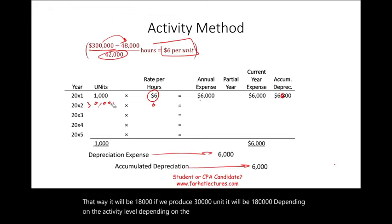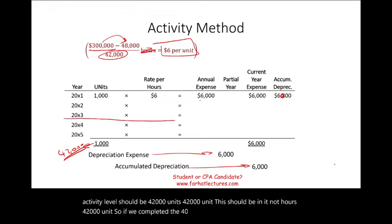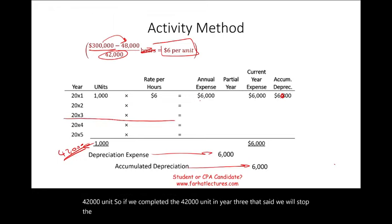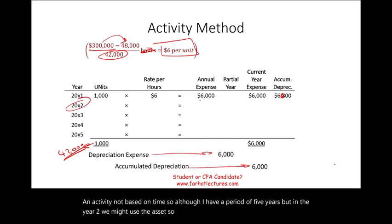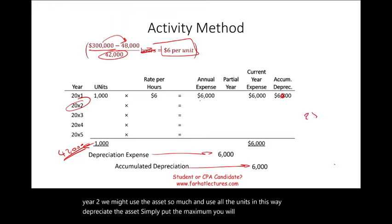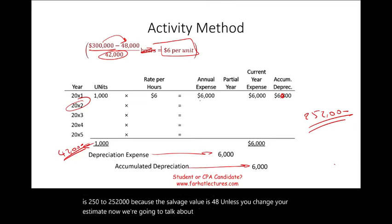The total activity level should be 42,000 units. If we complete the 42,000 units in year three, that's it — we stop depreciating this asset. The activity method is based on activity, not based on time. Although I have a period of five years, in year two we might use the asset so much that we use all the units. The maximum you will depreciate is $252,000, because the salvage value is $48,000, unless you change your estimate.